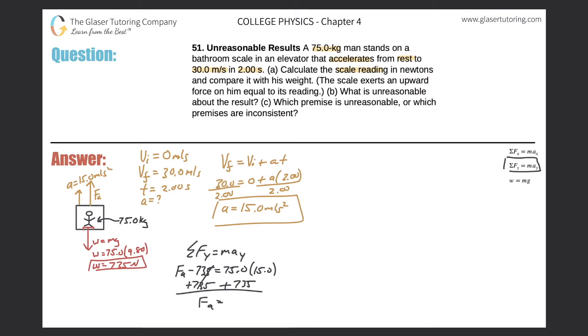So that cancels. My force applied then should be fairly straightforward: 75 times 15 plus 735. So we get a value of about 1860 newtons. Almost looks like a theta there. 1860 newtons. That's the force that's applied.